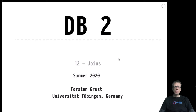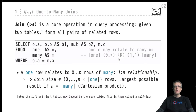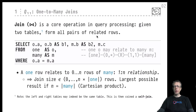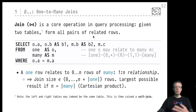Let's recall the essence of the join operation. This is truly a core operation in relational query processing. Given two tables, the join would be a binary operation that connects the rows of two tables, forms all pairs of related rows — and which rows are related is determined by the join predicate. Maybe it's an equality predicate — equi join — or maybe it's a general predicate — theta join.